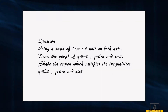Using a scale of 2 cm to 1 unit on both axes, draw the graph of y minus 3 equals 0, y equals 6 minus x, and x equals 5. Shade the region which satisfies the inequalities: y minus 3 is less than or equal to 0, y is greater than 6 minus x, and x is less than or equal to 5.